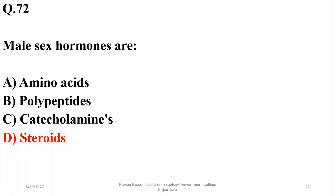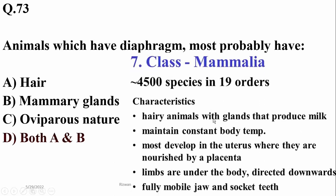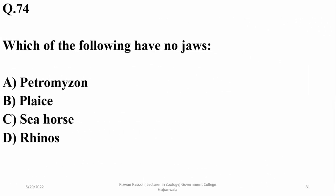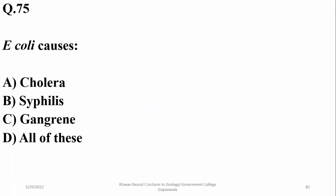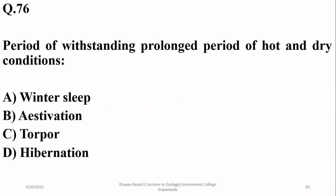Question 73: animals with a diaphragm most probably also have mammary glands, and may be oviparous in nature. Mammary glands are a characteristic feature of mammals, so the right option includes both alpha and beta. Question 74: Petromyzon, or lampreys, have no jaws — they are jawless fishes, so the right option is alpha. Question 75: they can cause gangrene — the right option is charlie.